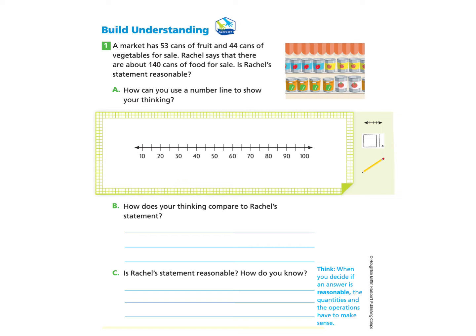We will start under Build Understanding Part 1, and you can pause anytime as needed. A market has 53 cans of fruit and 44 cans of vegetables for sale. Rachel says that there are about 140 cans for sale. Is Rachel's statement reasonable?